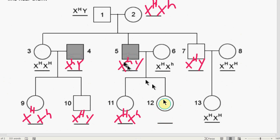We're going to use the same reasoning on number twelve. Number twelve, the dad had to give the X, little h, and since number twelve is not a hemophiliac, then she had to inherit the big H from mother. So she gets X, big H, X, little h. And so we filled in everybody.